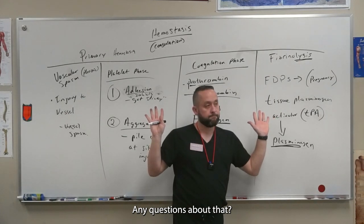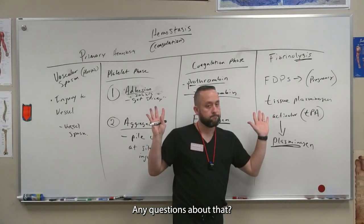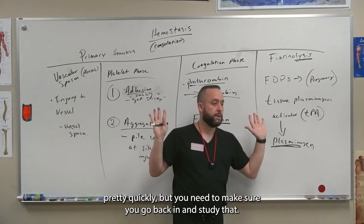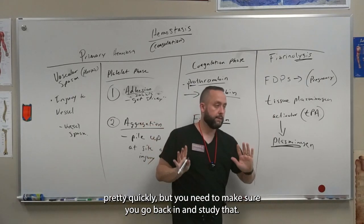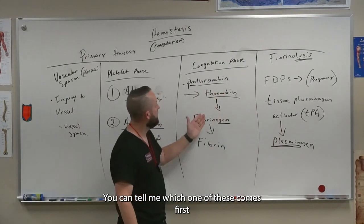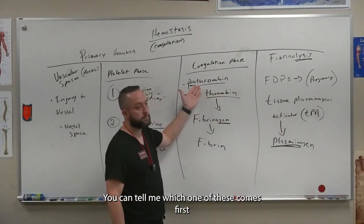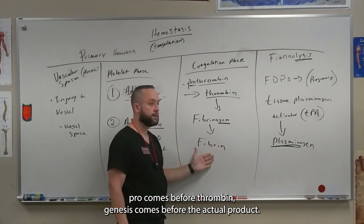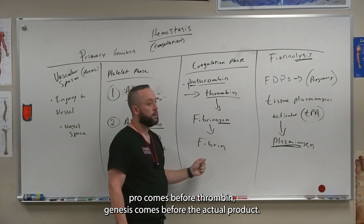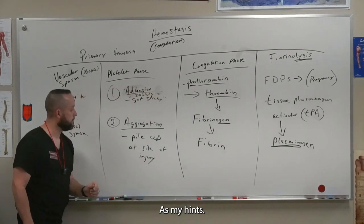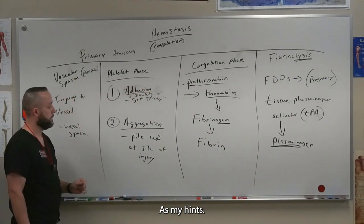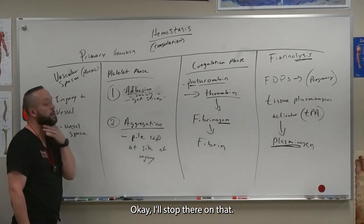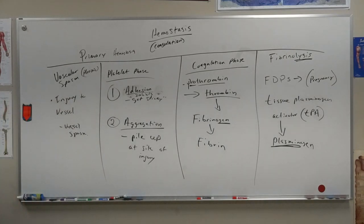Any questions about that? I kind of summarized it pretty quickly, but you need to make sure you go back and study that. You can tell me which one of these comes first. Pro comes before thrombin. Genesis comes before the actual product. Those are my hints. I'll stop there on that.